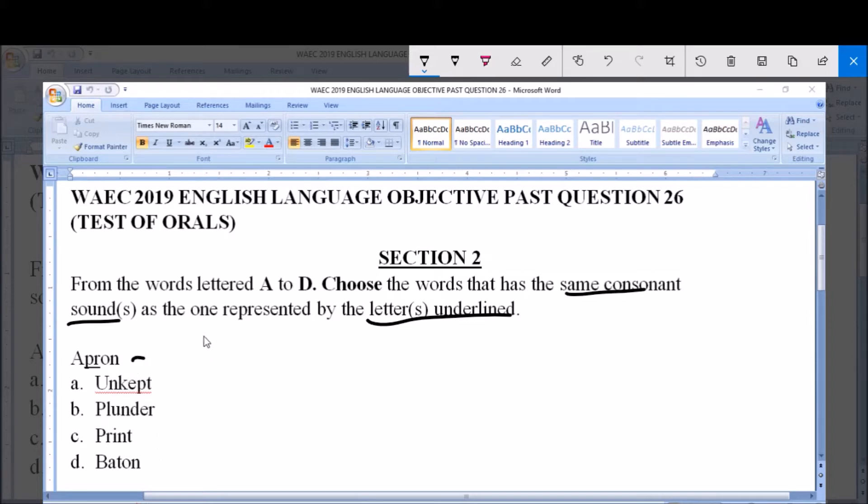So apron is transcribed this way. Now you can see that this P and R, this is the consonant sound it represents.